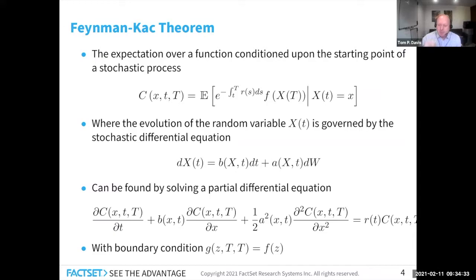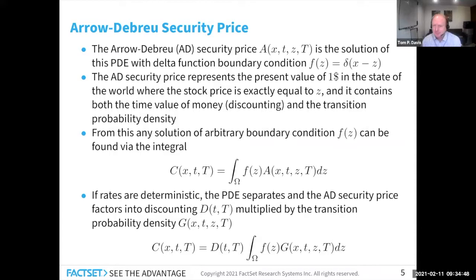But what if I wanted to do something more general — not solve it in the special case of one specific payoff function? One thing I could do is calculate the Arrow-Debreu security price, which is the solution of this PDE with the boundary condition that the market observable is exactly equal to one precise value Z, say 101.25. Of course it's very unlikely to hit that value, so we need the parameterized Arrow-Debreu security price for all values of Z. This gives you the present value of $1 in the specific state of the world where the stock is exactly equal to Z. From this, you can do essentially a convolution integral to get the option price for any payoff function F.